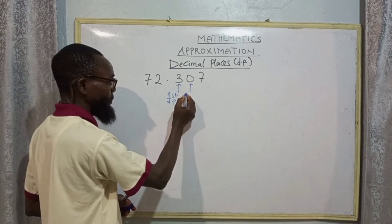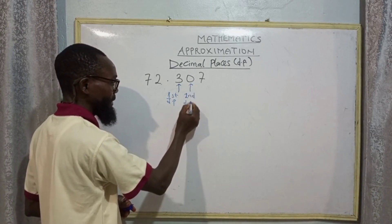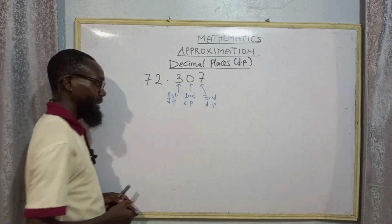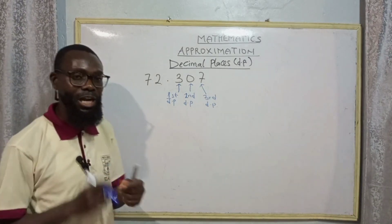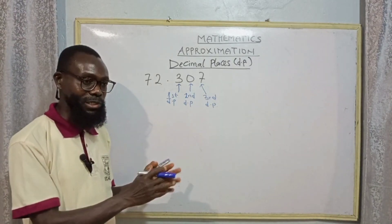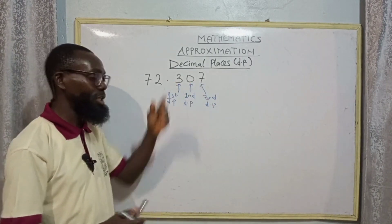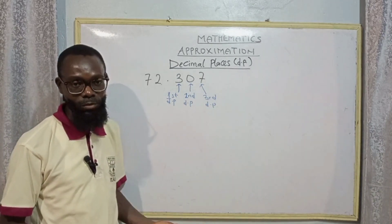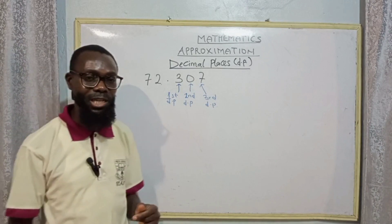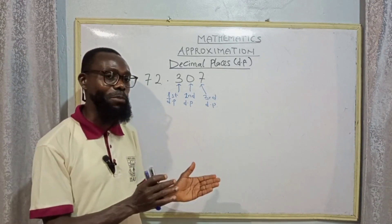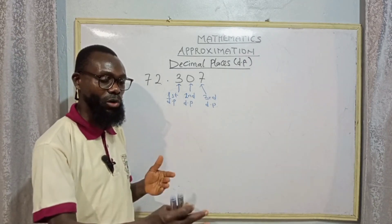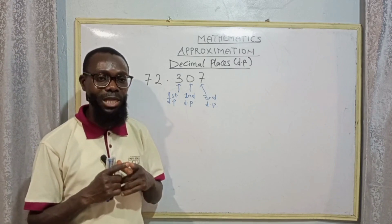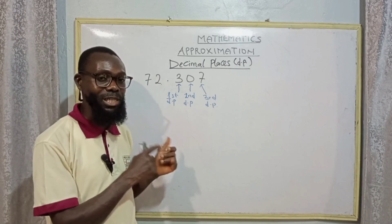In 72.307, three is the first decimal place, zero is the second decimal place, and seven is the third decimal place. This is how we determine our decimal places: first, second, third, and so on to the fourth, fifth, sixth. We shouldn't forget from our previous class — numbers between one and four you round down to zero, while from five to nine you round up to one. That simple rule still holds when dealing with decimal places.